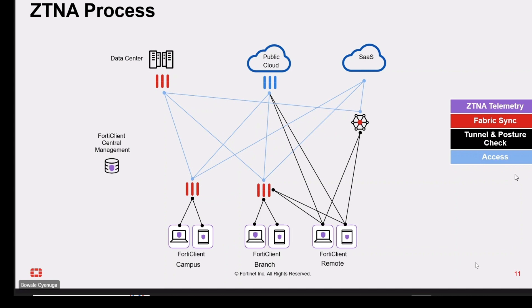This is done by verifying the user's credentials and checking the user's security posture at every given time. The user's security posture is a measure of the security of the user's device, determined by factors such as the operating system, antivirus software status, and security settings of the device. If the user is authorized, the access proxy establishes a secure connection to the application by creating an encrypted tunnel between the user's device and the application, protecting all data transmitted.